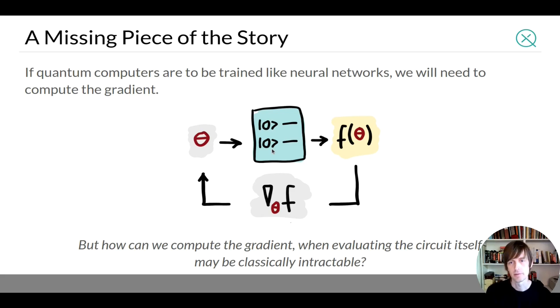But as I said, quantum computers have this special capability of interfering complex amplitudes in large dimensional spaces, which is in a lot of cases hard to simulate or emulate classically or basically intractable to do so. So if we have a computation, we have a circuit that is intractable to evaluate on a classical device, how could we possibly compute the gradient of that? So we not only need to evaluate the function that's coming from the circuit, we need to evaluate the gradient of that function. How can we do that if the circuit itself is classically intractable?